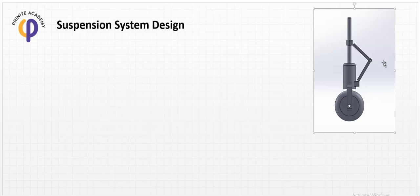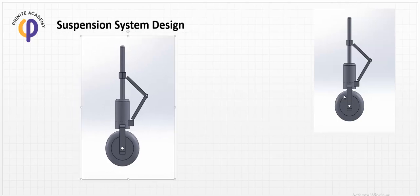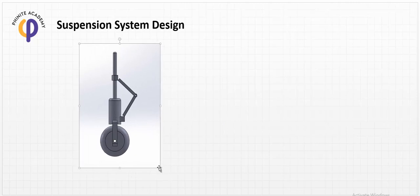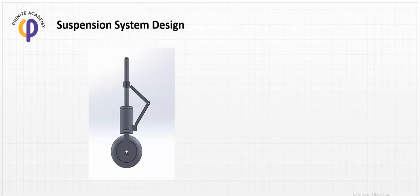We will start by creating this model in order to obtain the full picture of the suspension system design. We have three parameters here — mass, spring, and damping ratio — and we should determine each of them.